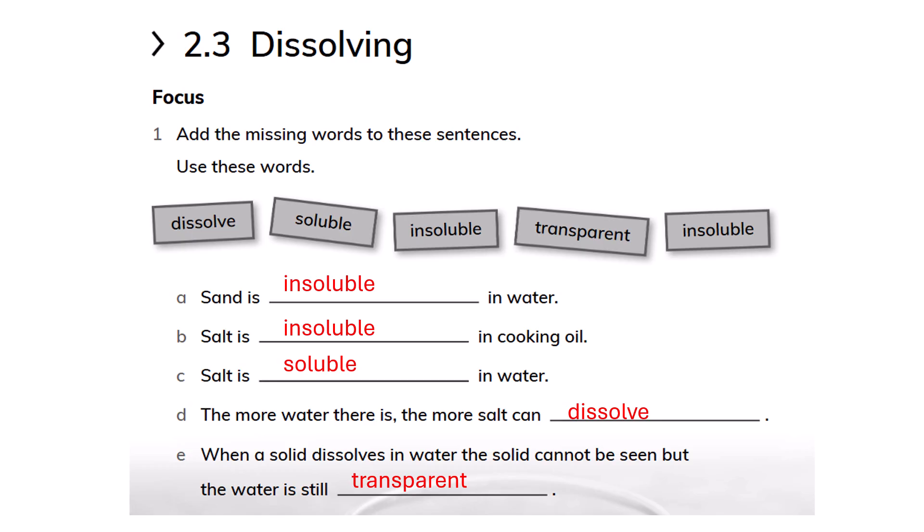Dissolving. Add the missing words to these sentences using: dissolve, soluble, insoluble, transparent. Sand is insoluble in water. Salt is insoluble in cooking oil. Salt is soluble in water. The more water there is, the more salt can dissolve. When a solid dissolves in water, the solid cannot be seen but the water is still transparent.